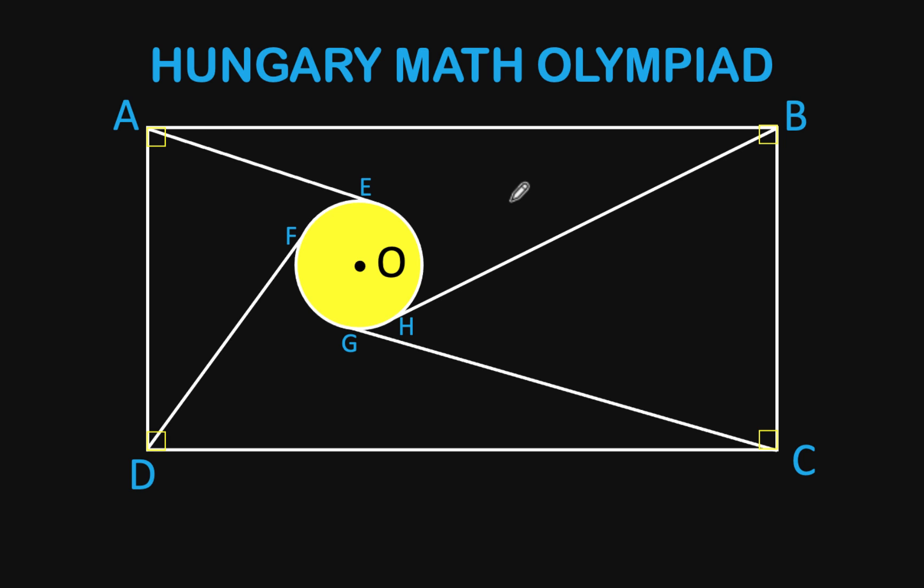The length of segment AE is given to be 33, segment DF is 35, segment BH is 85, and we do not know the length of segment CG, let's call that as X. We would like to find the value of X. You can pause the video and see if you can solve this beautiful geometry problem.